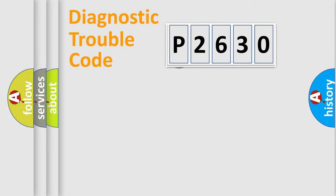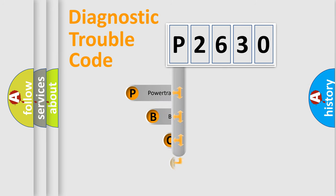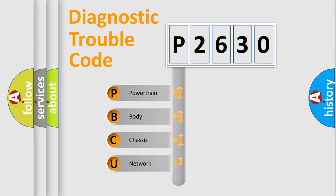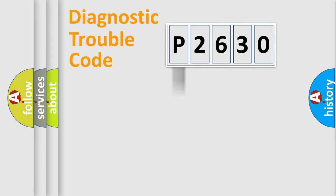First, let's look at the history of diagnostic fault code composition according to the OBD2 protocol, which is unified for all automakers since 2000. We divide the electric system of the automobile into four basic units: Powertrain, Body, Chassis, and Network. This distribution is defined in the first character of the code.